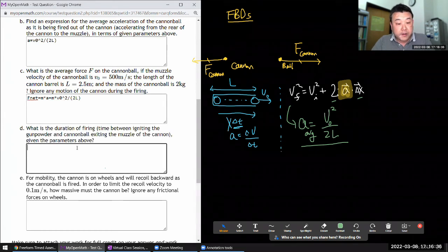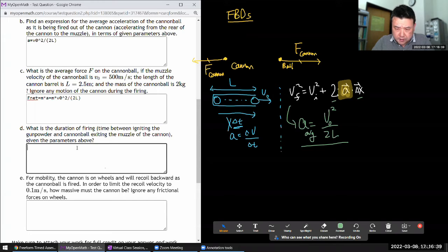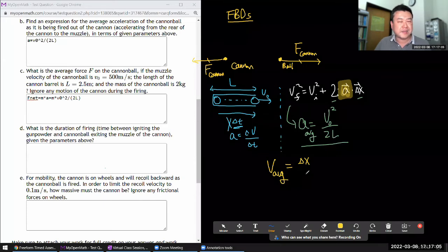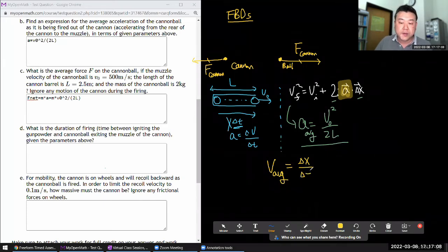Part D, what is the duration of firing. This might take a little bit of time. There's a couple different ways you can go. Let me show you the shortest algebraic way, which is to exploit two different ways we describe average speed. There's the definition of average speed which is the displacement divided by duration of time.